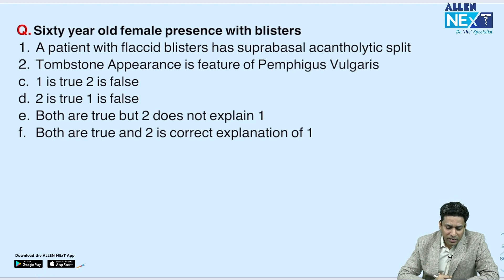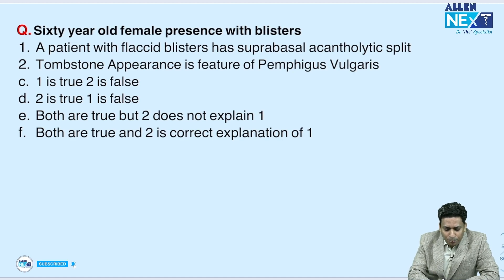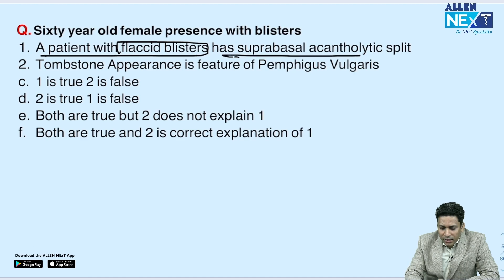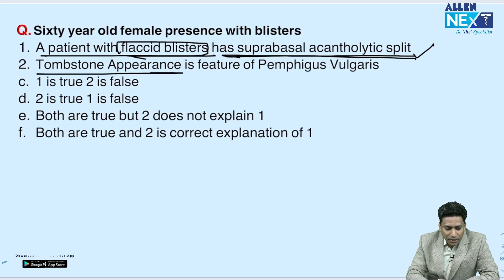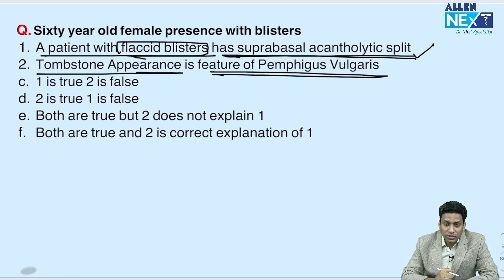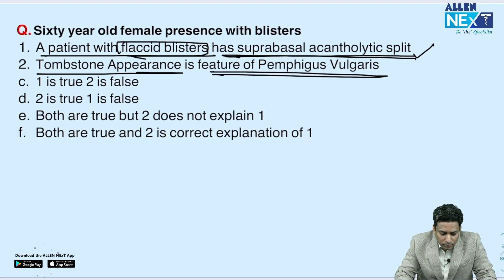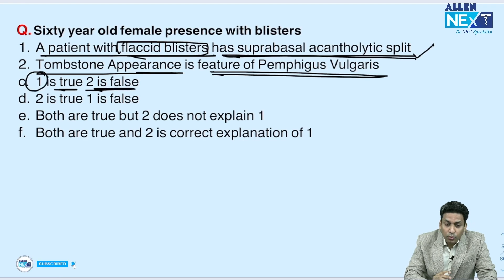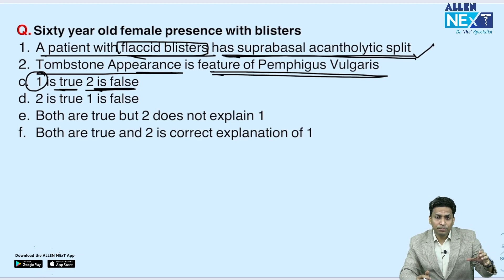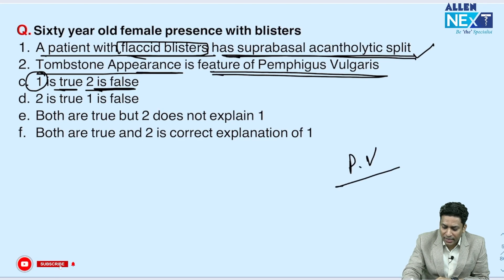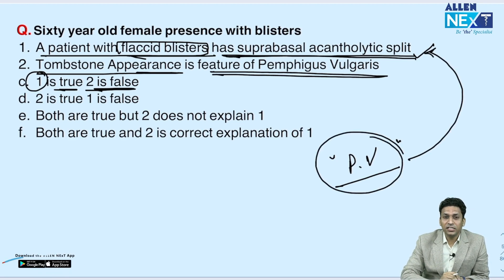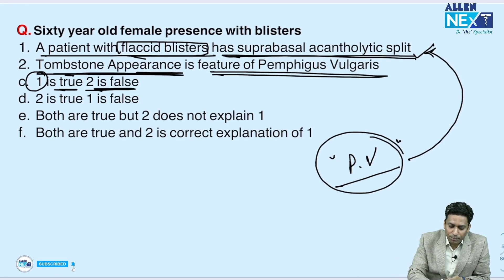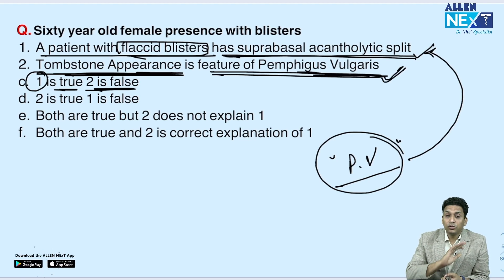There was a question where clinical history was mentioned: a patient with flaccid blisters had suprabasal acantholytic split, and the second statement was that tombstone's appearance is a feature of pemphigus vulgaris. The question asked whether statement one is true while statement two is false. In fact, flaccid blisters with suprabasal acantholytic split are features of pemphigus vulgaris, and tombstone's appearance is also a histological finding in pemphigus vulgaris — so both statements are true.